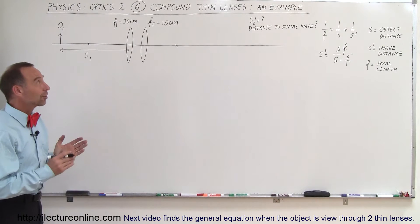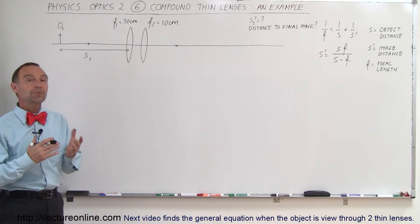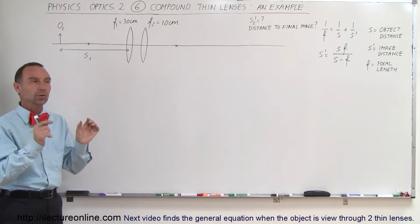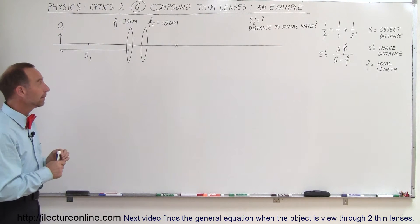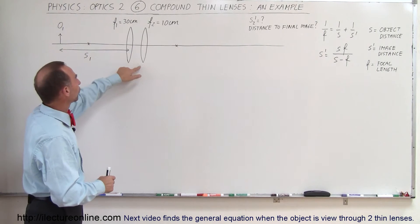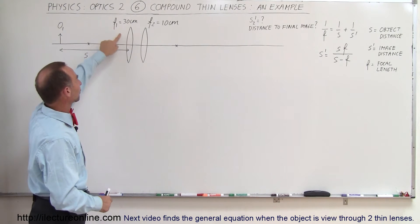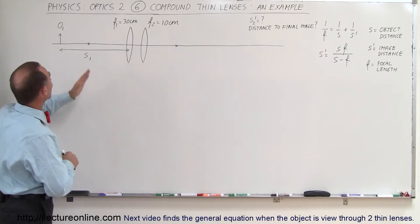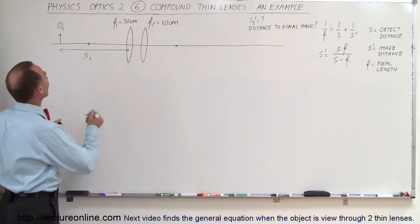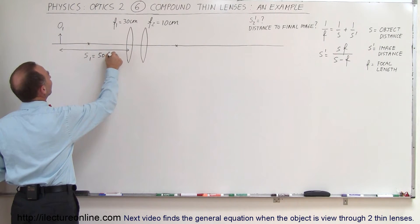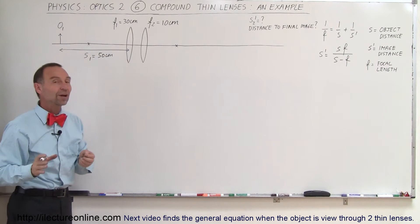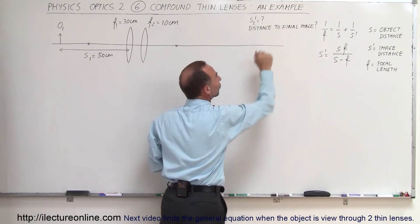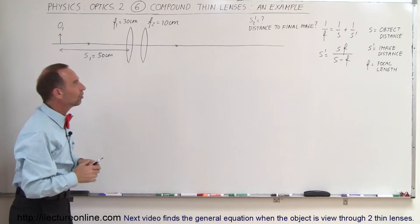Welcome to our lecture. Now we're going to talk about how to solve problems using compound thin lenses — bringing two thin lenses close together. We have two converging lenses: the first has a focal length of 30 centimeters, the second has a focal length of 10 centimeters. We place an object 50 centimeters in front of the first lens. The question is: where is the position of the final image relative to the second lens?